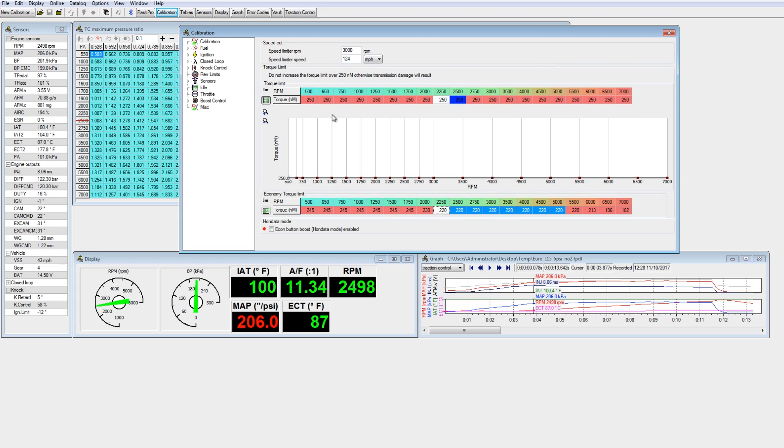So what we have here is 250 Newton-meters, which is otherwise known as the Honda A+ 6 psi calibration. Let's make things a little bit easier for the CVT.